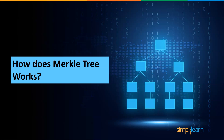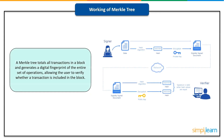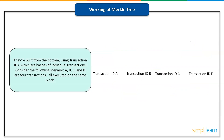Now that we know about various aspects of the Merkle tree, let's understand how the Merkle tree works. A Merkle tree totals all transactions in a block and generates a digital fingerprint of the entire set of operations, allowing the user to verify whether a transaction is included in the block. Merkle trees are made by hashing pairs of nodes repeatedly until only one hash remains. This hash is known as the Merkle root or the root hash. They are built from the bottom using transaction IDs, which are hashes of individual transactions. Each non-leaf node is a hash of its previous hash, and every leaf node is a hash of the transactional data of each block.